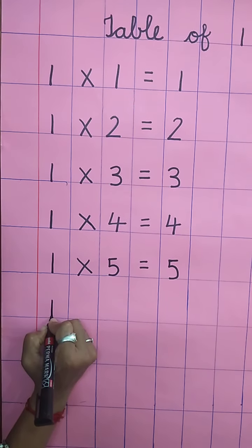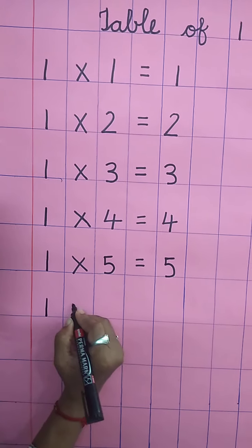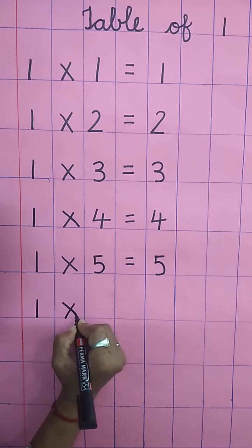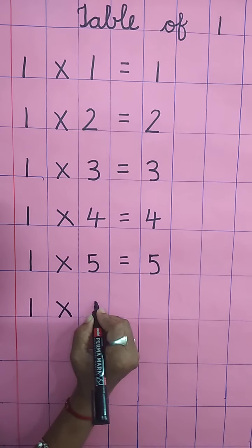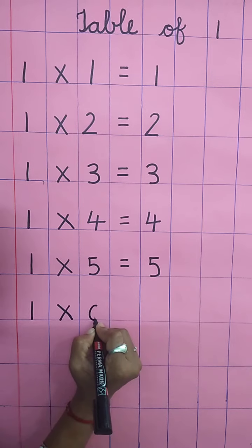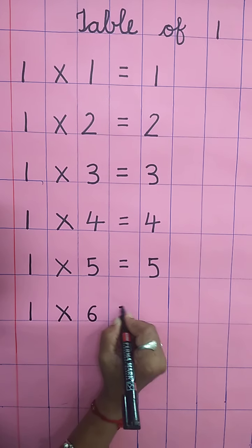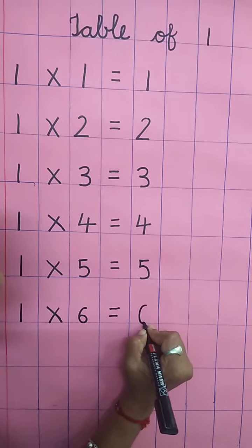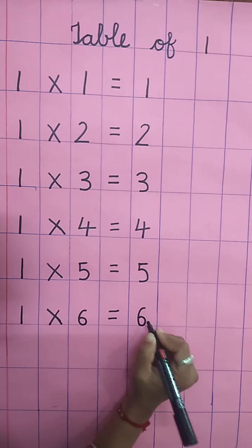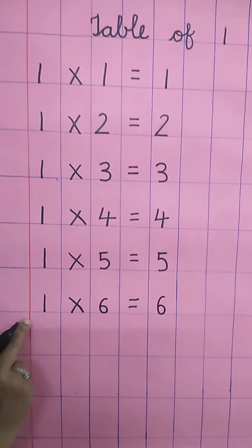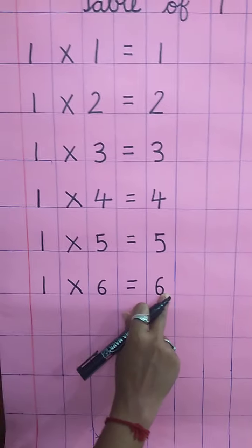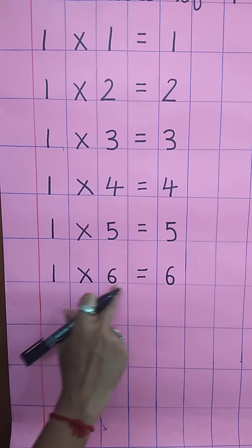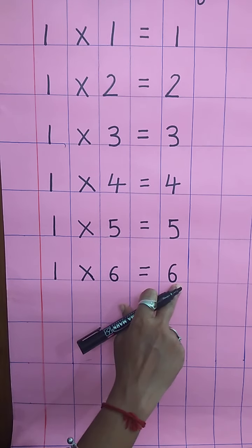Again, write down one. Multiplying sign. Write down six. Equal sign. Again, write down six. One six's are six. You have to write. One six's are six.